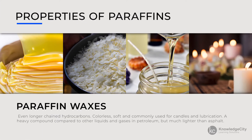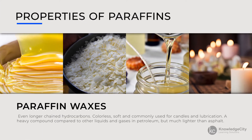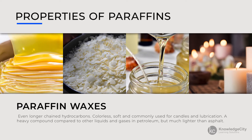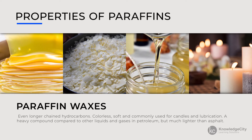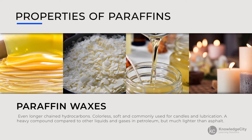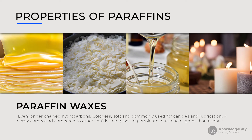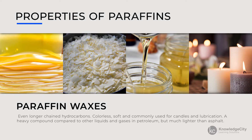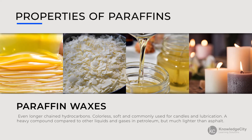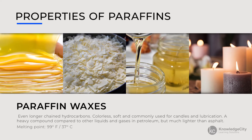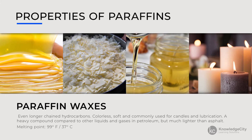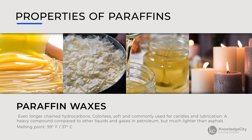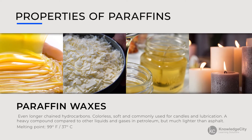Paraffin waxes are even longer-chained hydrocarbons. They're typically colorless and soft, which is why they're commonly used for candles and lubrication. It's a heavy compound compared to the other liquids and gases in petroleum, but much lighter than asphalt. 20 to 40 of the carbons in the hydrocarbon chain of paraffin wax have a boiling point of 370 degrees Celsius, but a melting point of 37 degrees Celsius — not much higher than room temperature. The high boiling point but low melting point makes paraffin wax especially suited for candle-making.